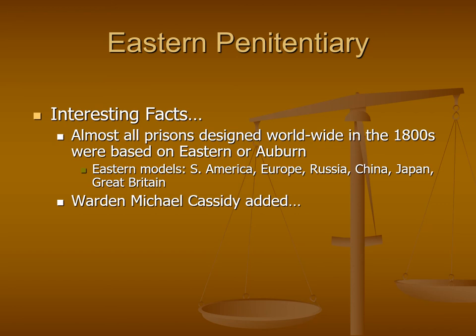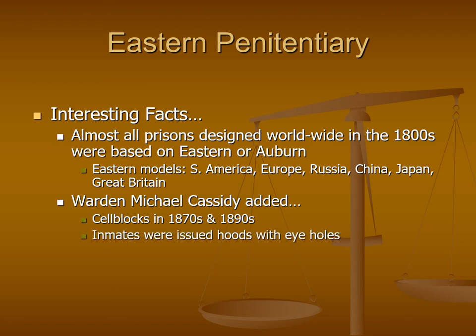Eastern Penitentiary didn't just stay with its basic design. Over time there were certain advancements, and arguably one of the biggest contributors was Warden Michael Cassidy, who served as warden during the 1870s through the 1890s. He added cell blocks in the 1870s and 1890s to handle a larger number of individuals, showing that even with those radiating arms, you could add more cell blocks — just like adding more spokes on a bicycle wheel.